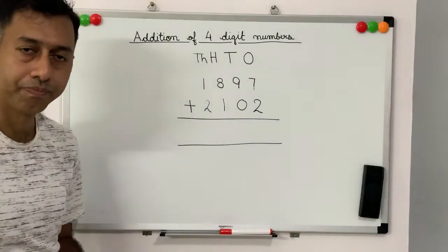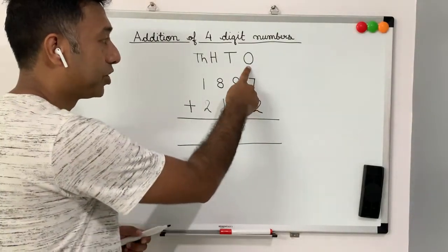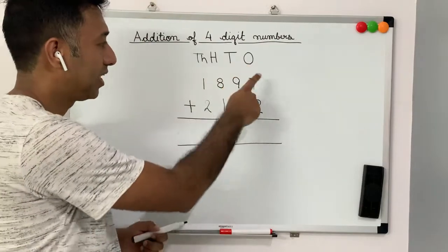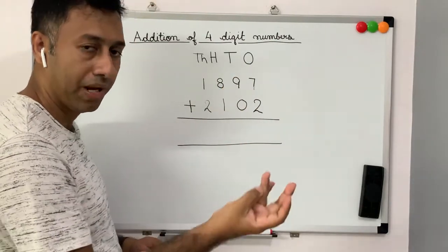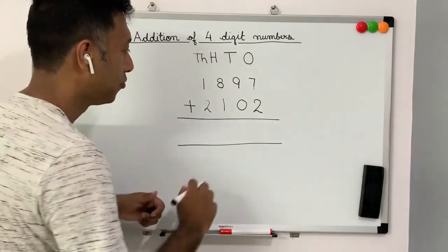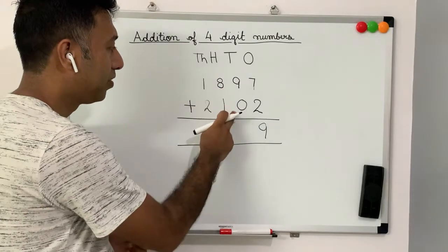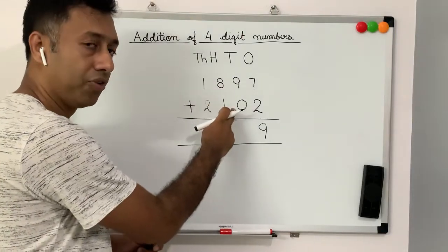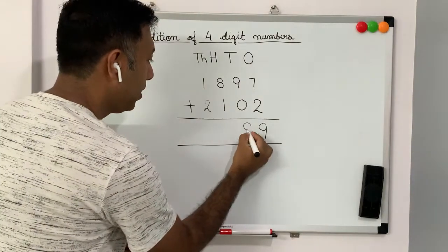How do we do it? Yes, you are right. First, we will do the addition of the ones digit. So, 7 plus 2 is 9. Then, 9 plus 0, anything if you add to 0, it is the same number. So, 9 plus 0 will also be 9.